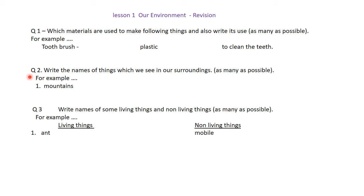You will make a long list. Second question: write the names of the things which we see in our surroundings. In our surroundings so many things are visible, you can see them. For example, mountains is given — you can write similarly other things also.